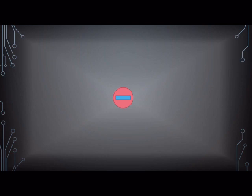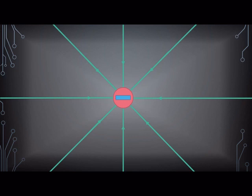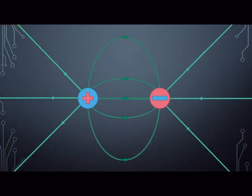For a negative charge, field lines are shown with arrows pointing towards the charge. Electric field lines are shown to move from positive to negative.